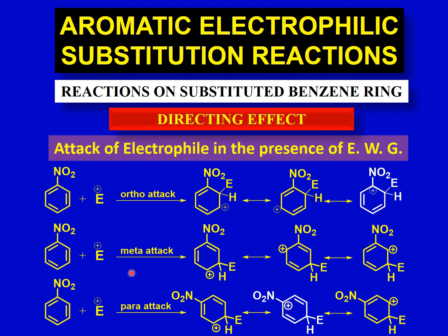So we have discussed the effect of electron withdrawing and electron donating groups on the reactivity of the benzene ring towards further substitution, as well as their directing effects, with the help of examples. I hope it helps you understand this topic. See you next time with more video lectures in organic chemistry. Thank you for watching and stay tuned.